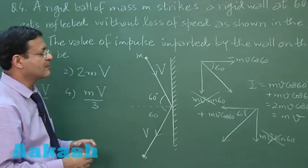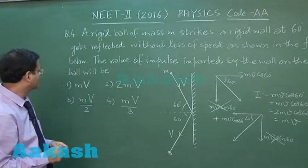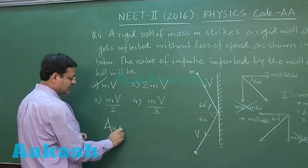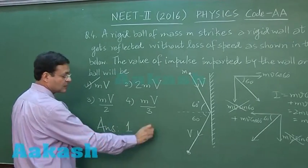So this is the impulse imparted on the ball as well as on the wall. And for that matter I will be marking answer 1, M v. So the correct answer for this question is answer 1.